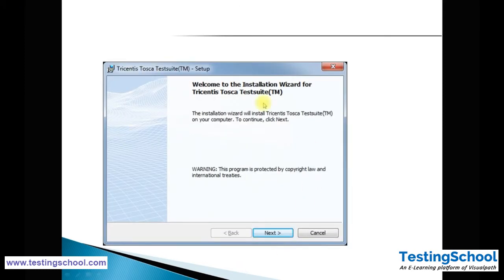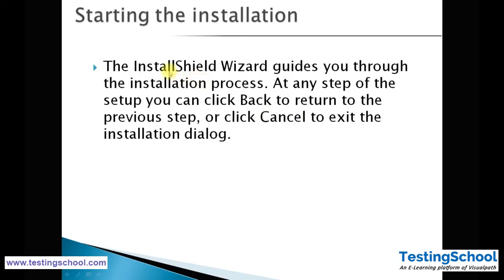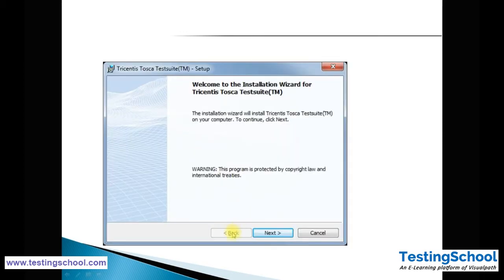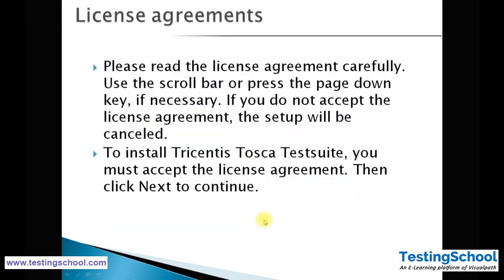Once the components have been successfully installed, Tricentis Tosca Suite will be installed on your workstation. This opens the Tricentis Tosca wizard — click the Next button. The installation wizard will guide you through the installation process. At any step you can click Back to return to the previous step, or Cancel to exit. Since Tosca is a licensed tool, there is a license agreement to review. You must accept the license agreement and click Next to continue.